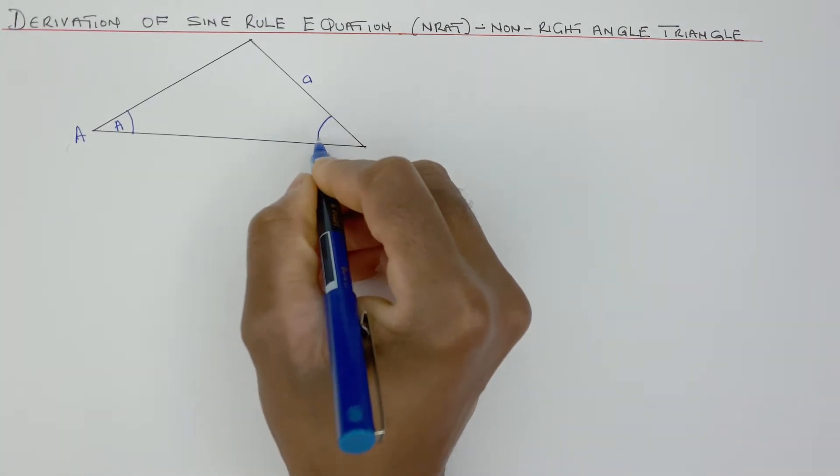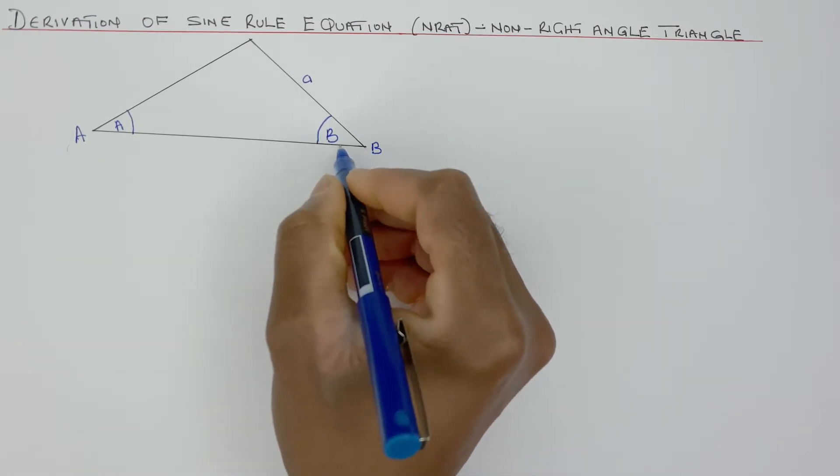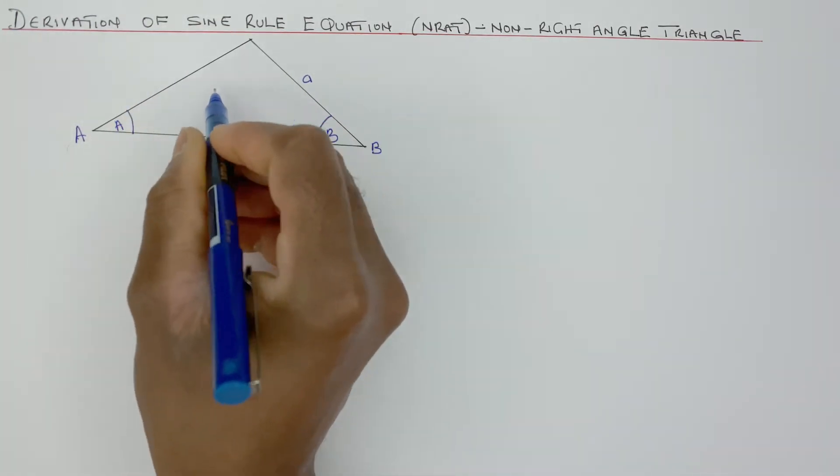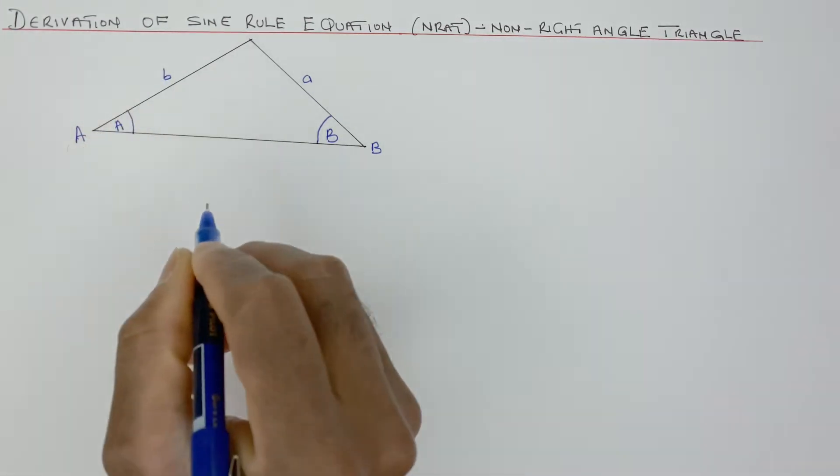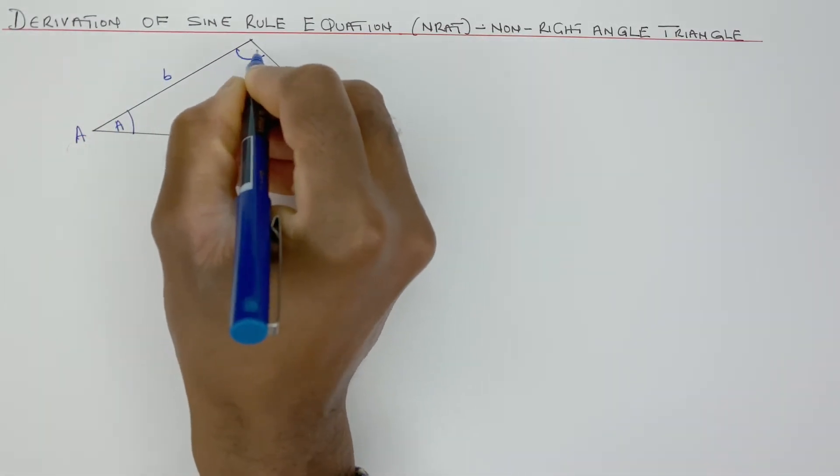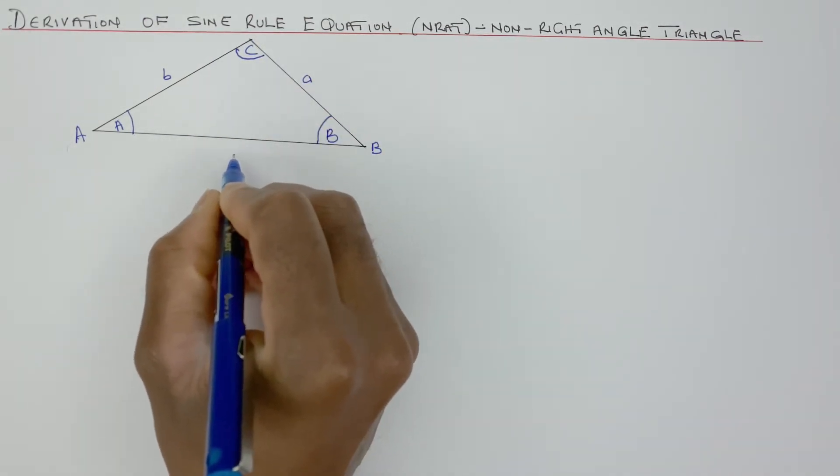And if I label this one angle capital B, that's the B. And the opposite to that, the side opposite to the angle B is little b. And if this is capital C, and the opposite to that is little c.